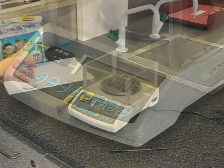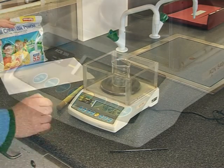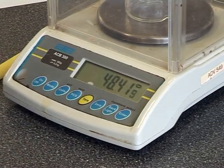Place a beaker or a watch glass onto the pan. Tare the beaker by pushing the tare button so that the balance reads zero.